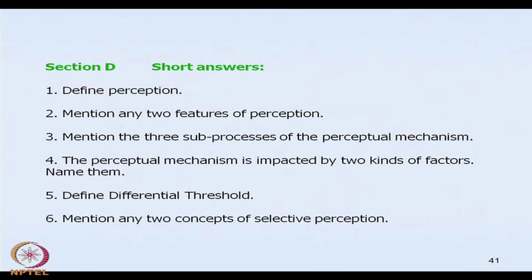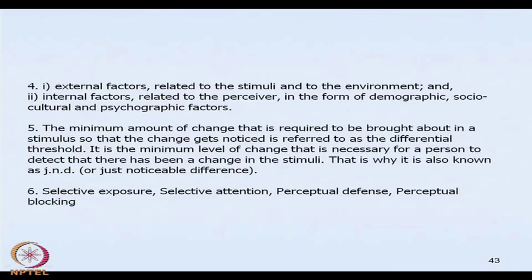Short answer section: Define perception — it is a process through which individuals interpret sensory impressions and give meaning to them. Features of perception: it is an intellectual process, broad in nature, and a subjective process — two people perceive things differently. It is also impacted by physiological as well as psychological and socio-psychological components. The sub-processes of perceptual mechanism are selection, organization, and interpretation. The perceptual mechanism is impacted by factors internal and related to the perceiver, and factors external and related to the stimuli. Differential threshold is the minimum amount of change required to be brought into the stimulus so that the change gets noticed — also called Just Noticeable Difference. Two concepts of selective perception: selective exposure, selective attention, perceptual defense, and perceptual blocking.